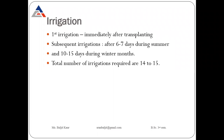Now irrigation. Irrigation is very important for every crop and vegetable. If we provide regular irrigation, our fruits or vegetables will have good size and good quality. First irrigation in the case of tomato should be done immediately after transplanting and subsequent irrigations after six to seven days during summer months.